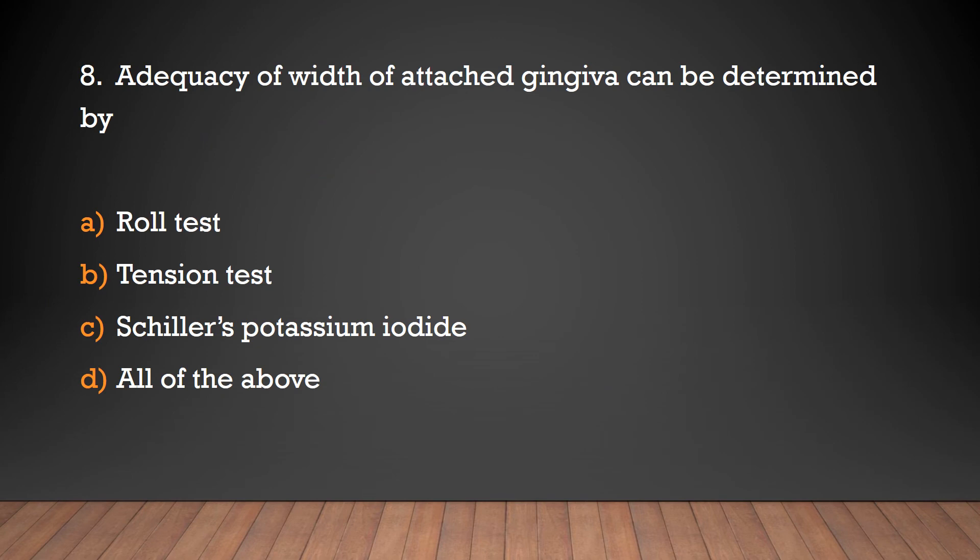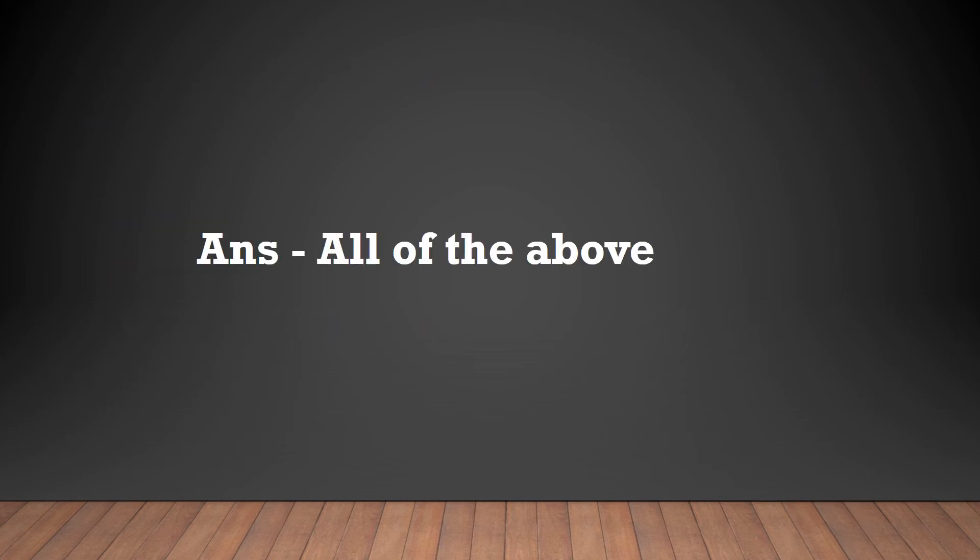Adequacy of width of attached gingiva can be determined by: roll test, tension test, Schiller's potassium iodide, or all of the above? The answer is all of the above.